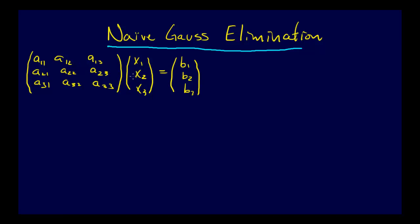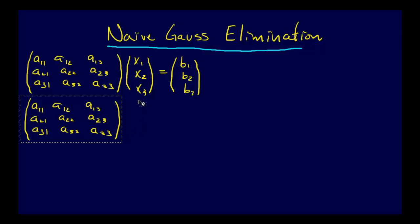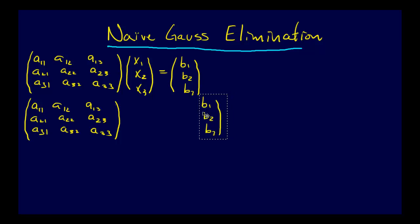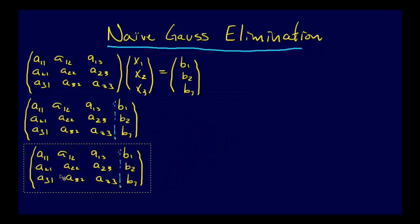A11, A12 — we have all the elements of A times this x vector equal to B. What we do in Gauss elimination is we take and write this matrix A as an augmented matrix. So we take B here and put it in, with just a vertical line here. So we draw it that way, and as we move from step 1 to step 2, let's copy this a few times.